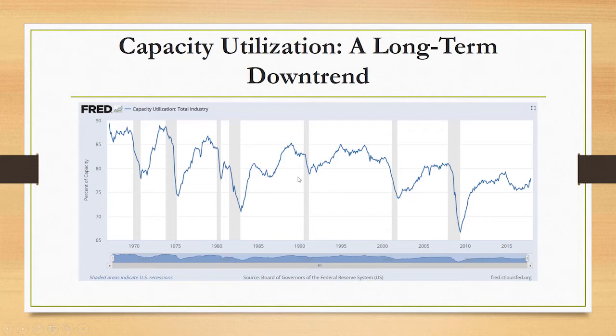If this was a stock, we might be looking for it to bottom, but we would say it's been in a downtrend now since the late 1960s. Capacity utilization is the amount of capacity in manufacturing facilities, mining and oil facilities, and utilities that's being used.